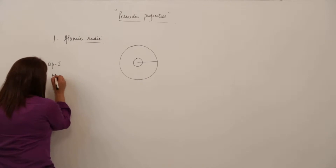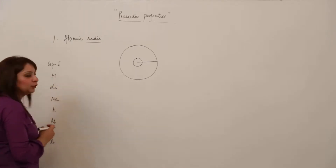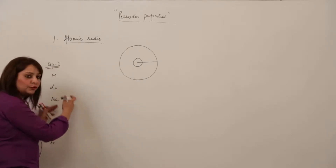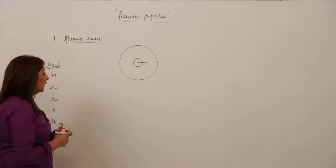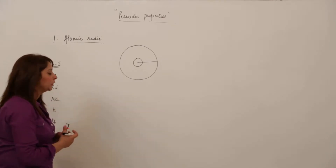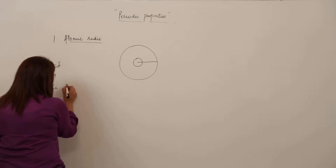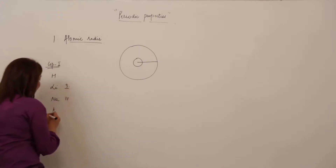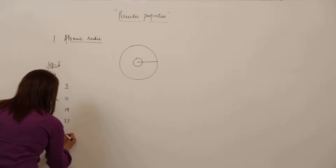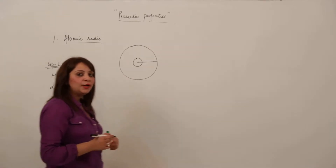The alkali metal group consists of hydrogen, lithium, sodium, potassium, rubidium, cesium, and francium. We are taking into consideration how atomic radii vary when we move down the group. The atomic numbers are: lithium is 3, sodium is 11, potassium is 19, rubidium is 37, cesium is 55, and francium is 87. We will be excluding francium because it is a radioactive element.